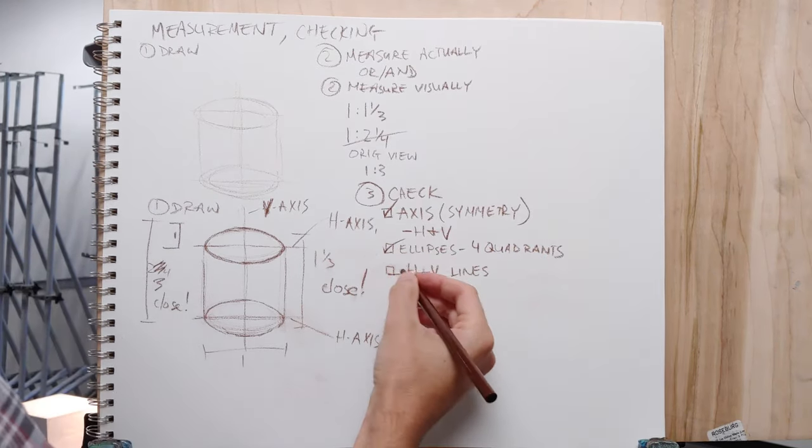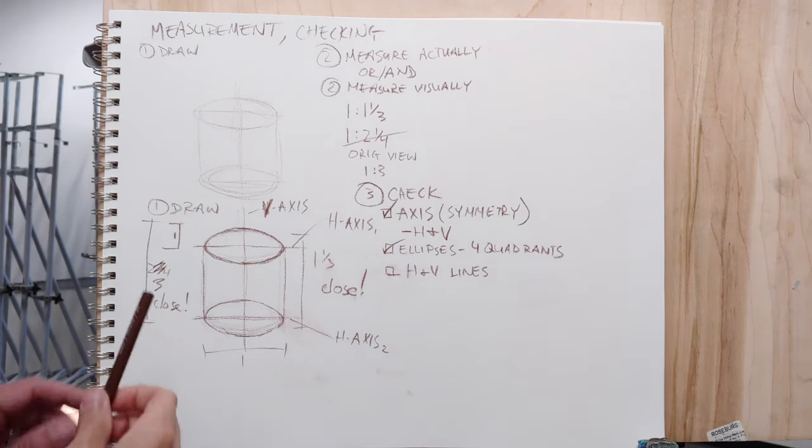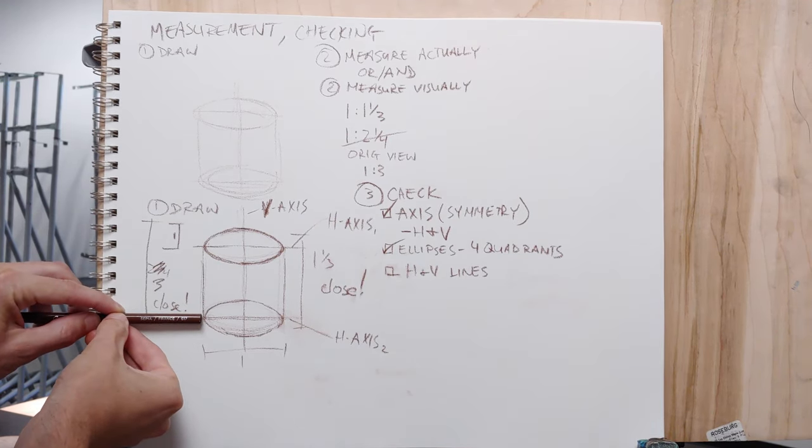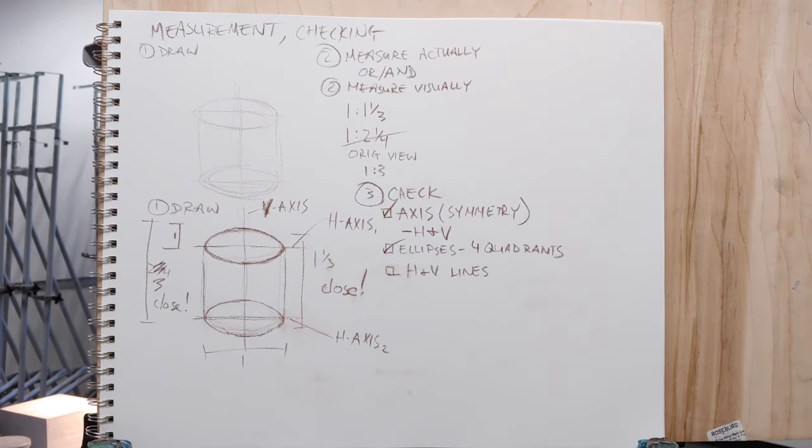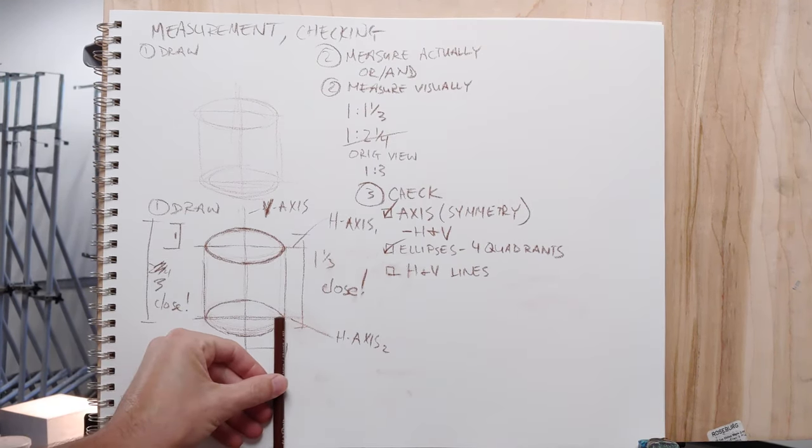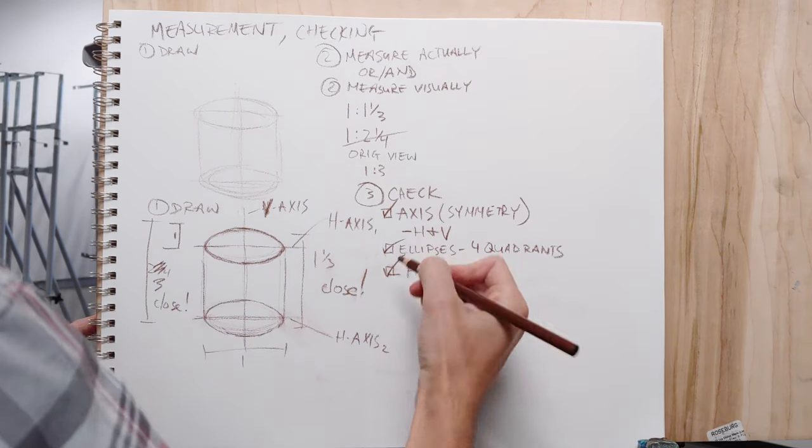If you're drawing boxes and stuff, definitely the main one is going to be horizontal and vertical lines. You just want to make sure that the horizontals are perfectly straight across and the verticals are perfectly straight up. I do that by checking against the edge of the paper.